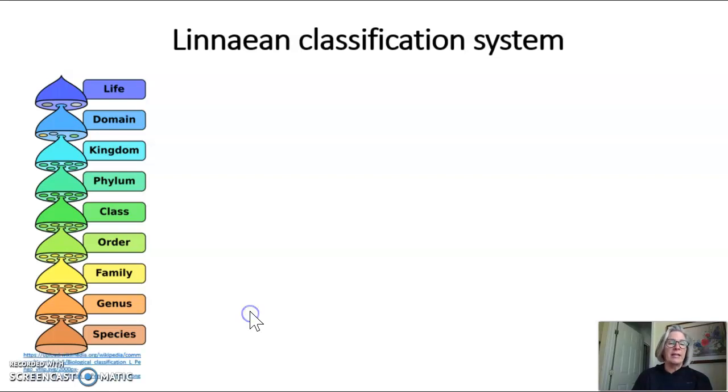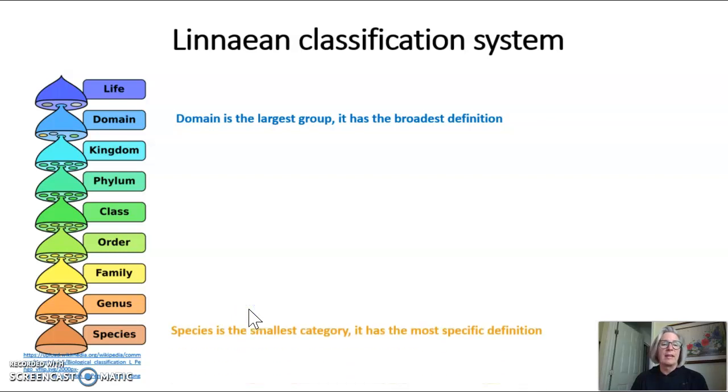So the first thing we want to look at is the Linnaean classification system. We briefly looked at this at the beginning of the year. A domain is the largest group in the Linnaean classification system of life. It has the broadest definition. The species is the smallest category. It has the most specific definition. And this classification system is hierarchical. All the qualities of a subcategory are present in the category above it.